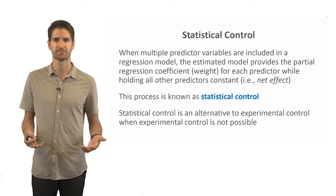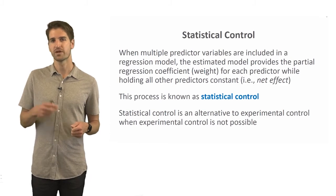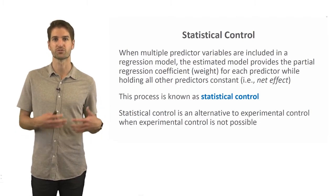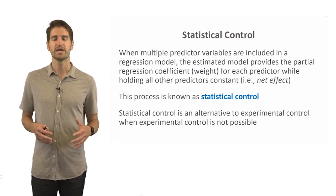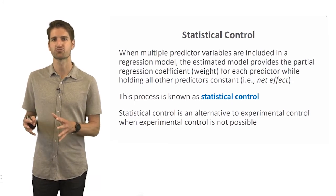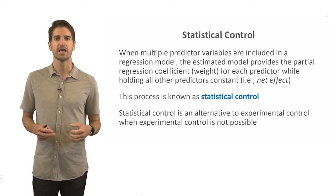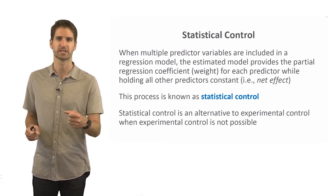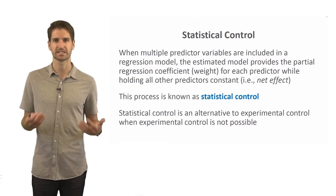If you have two predictor variables, each one is essentially predicting the outcome variable while holding the other constant. This is the concept known as statistical control. Statistical control can be thought of as an alternative to experimental control, especially in situations when experimental control is not feasible or possible. Experimental control involves having an actual control group with random assignment, where everything else is the same except what's being manipulated — but that's challenging in some organizational settings.